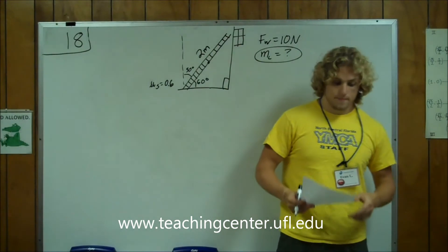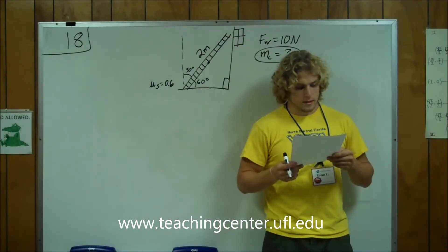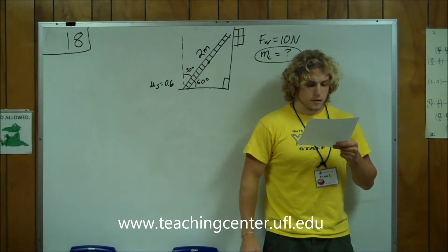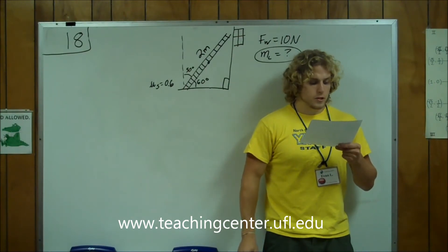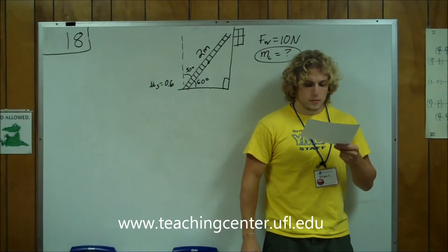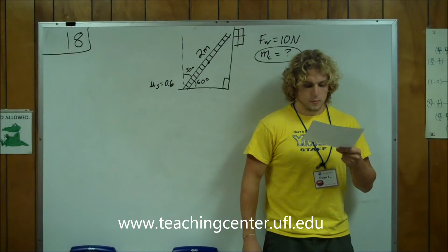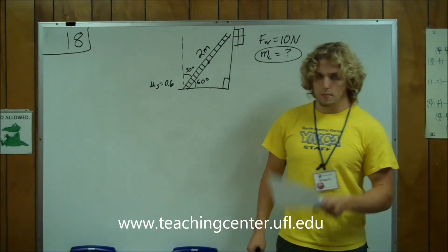That's problem number 18. Number 18 states, a uniform ladder of length 2 meters leans against a window, making an angle of 30 degrees to the vertical. There is no friction between the ladder and the window. The coefficient of static friction between the ladder and the ground is 0.6. If the window can withstand the force of 10 N without breaking, what is the maximum the mass of the ladder can be?